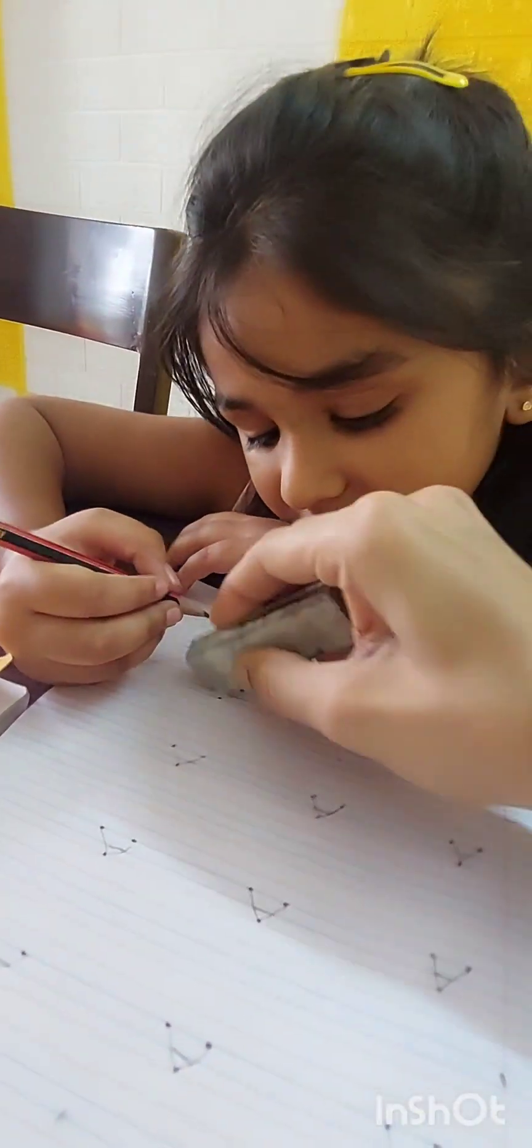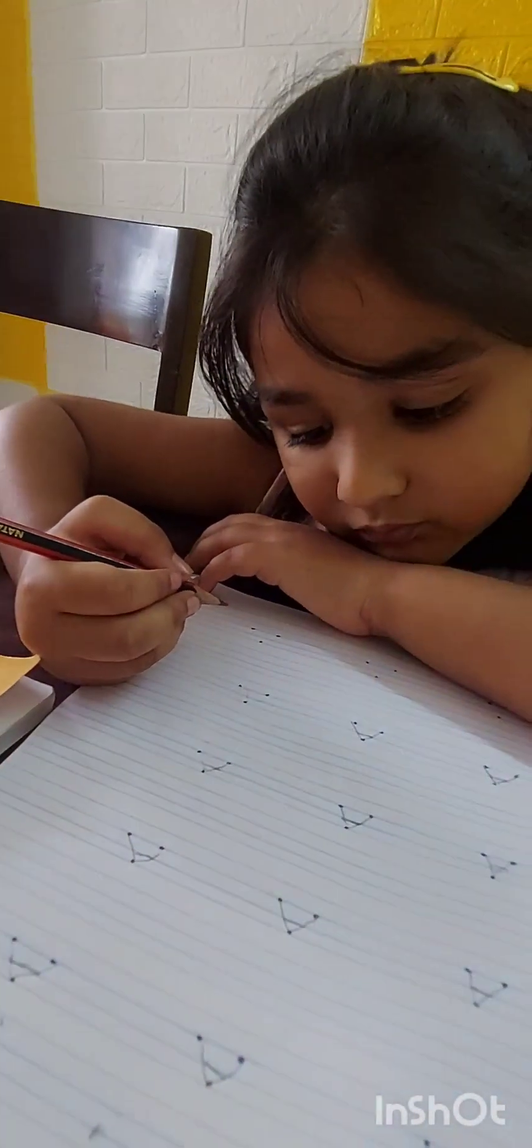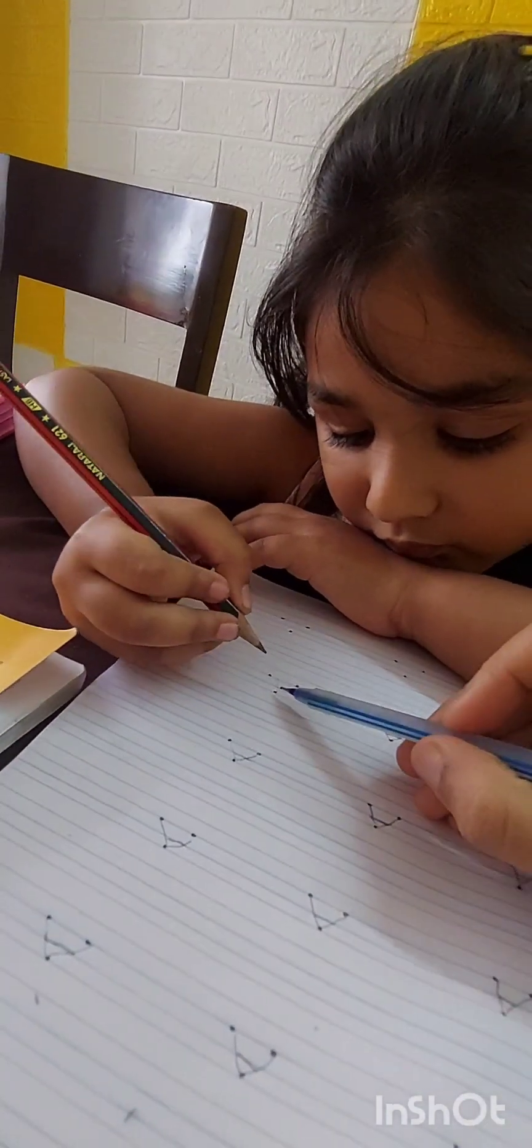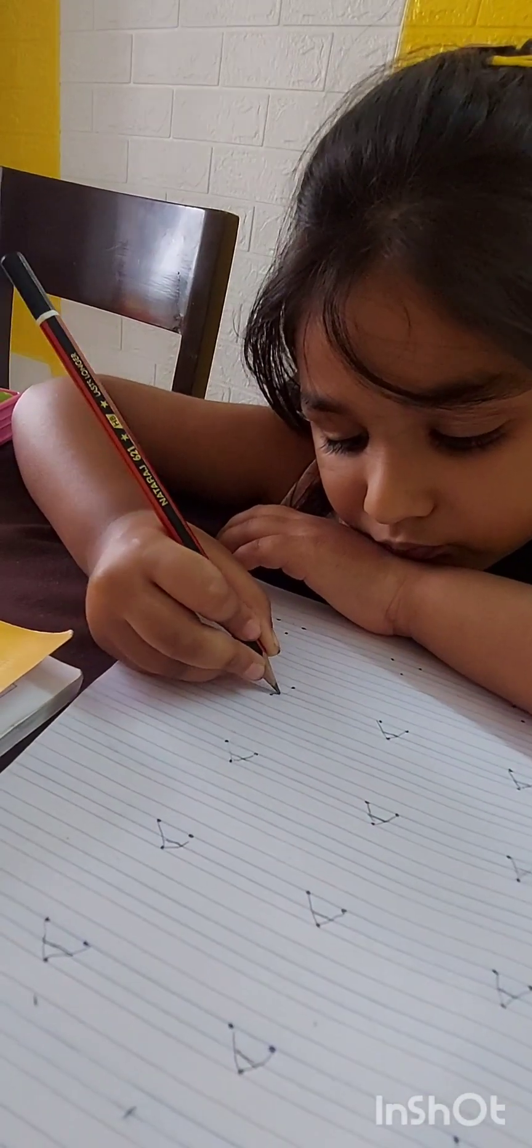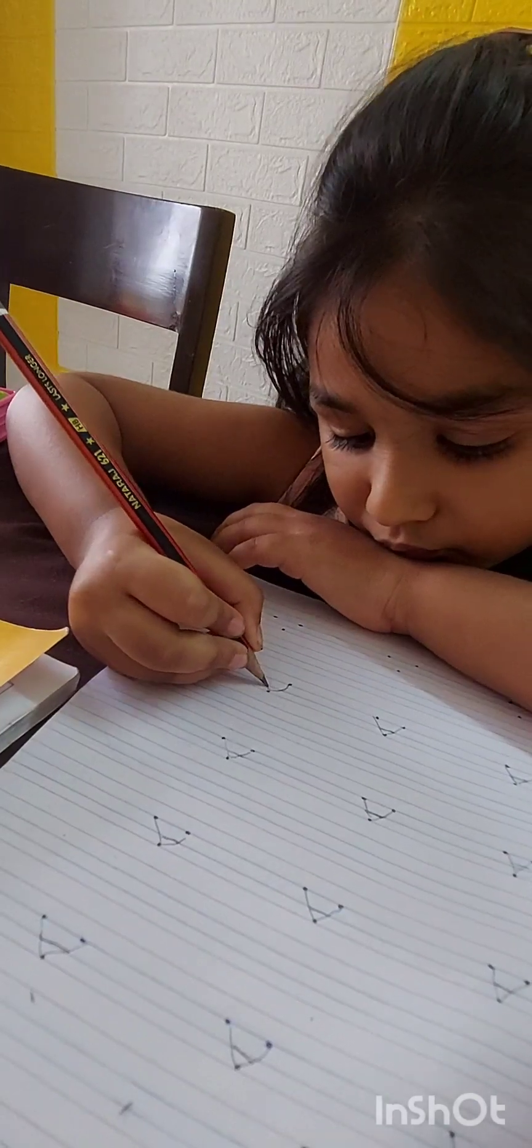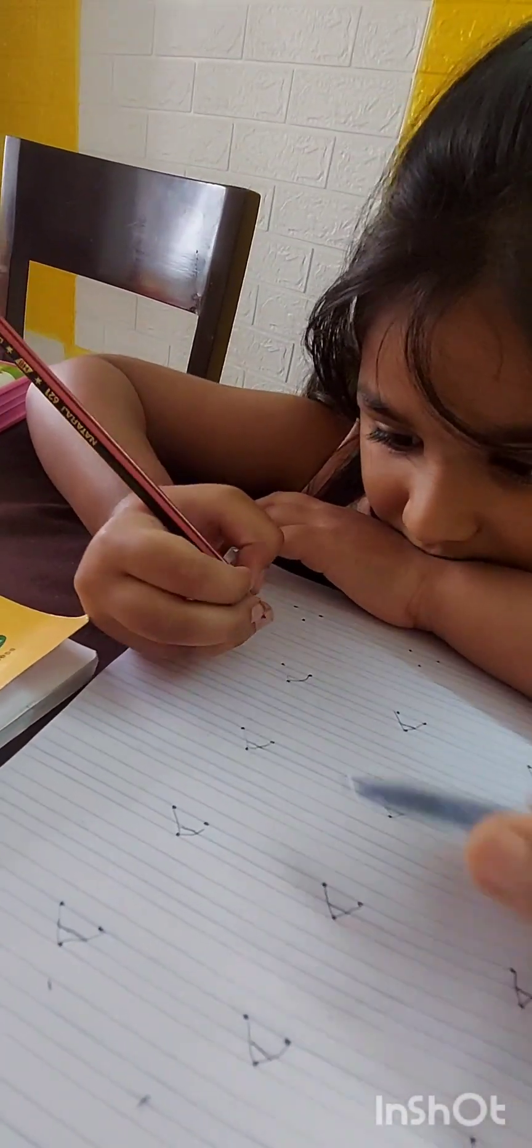It's okay, bita. Chalo. Try. Try. After that, without dots. Haan? Slant line. This side. This side. No, no, no, no, no, no. Wait, wait, wait, wait, wait, haan? Keep your pencil point here and join. Slant line.